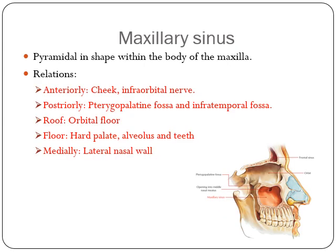The maxillary sinus is pyramidal in shape within the body of the maxilla. Its relations are: anteriorly the cheek and the infraorbital nerve; posteriorly the pterygopalatine fossa and infratemporal fossa; superiorly the orbital floor; inferiorly the hard palate, alveolus, and teeth; and medially the lateral nasal wall.